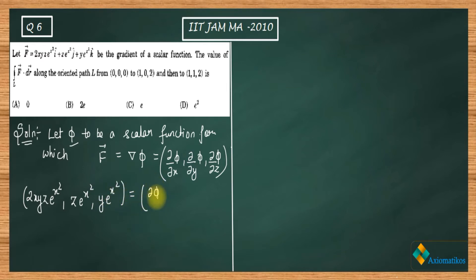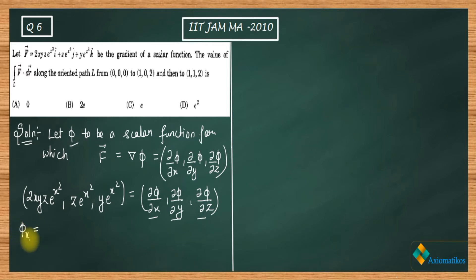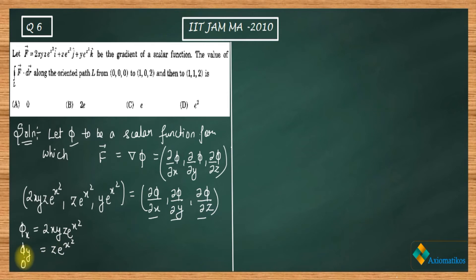I am writing the coordinate form — both forms mean the same. So the first aim is to determine phi. Once you determine phi, you are done with this question. From here we get: ∂φ/∂x = 2xyz·e^(x²), ∂φ/∂y = z·e^(x²), and ∂φ/∂z = y·e^(x²).